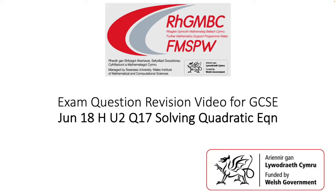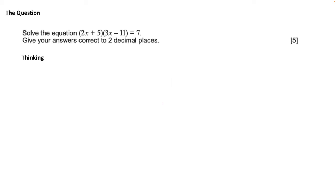Exam question revision video for GCSE, solving quadratic equation. So our question is, solve the equation 2x plus 5 in brackets times 3x minus 11 in brackets equals 7 and give your answers correct to two decimal places.